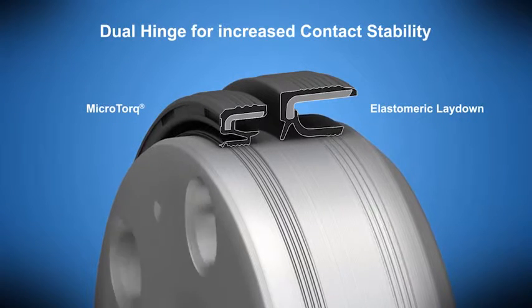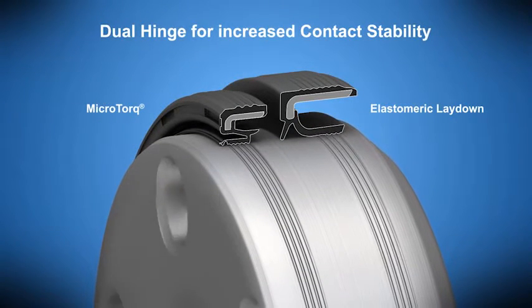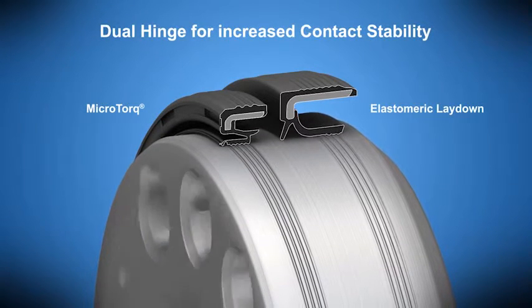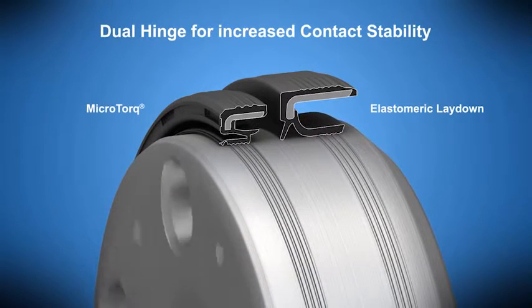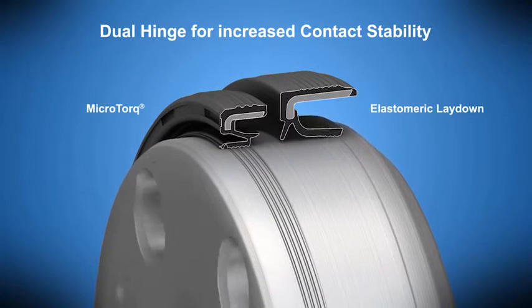One of the key features of the dual hinge flex section is that it allows the sealed lip to accommodate any shaft eccentricities. So as that shaft moves, the sealing lip maintains uniform contact at all times.